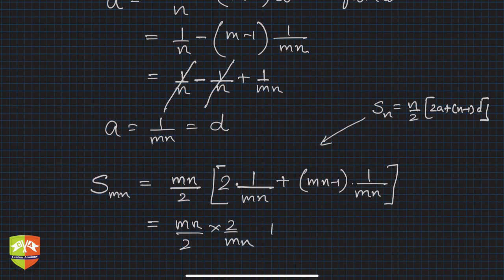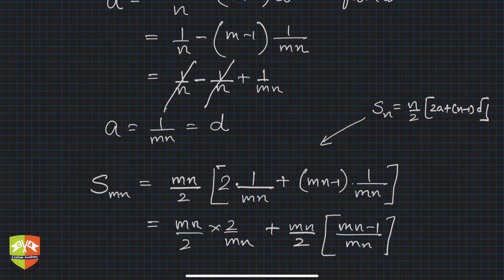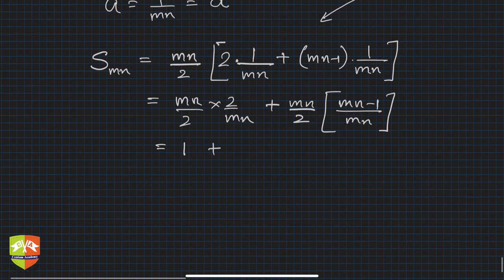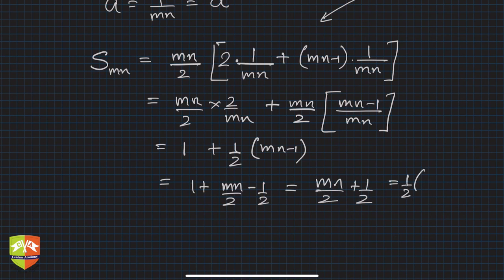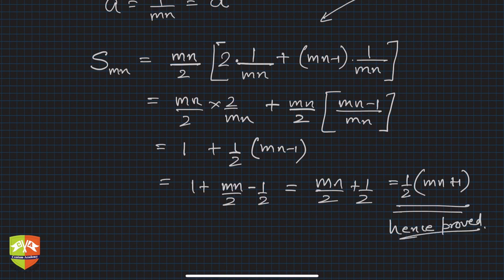Simplifying: S_mn = (mn/2) × [2/mn + (mn − 1)/mn] = 1 + ½(mn − 1) = 1 + mn/2 − ½ = mn/2 + ½ = ½(mn + 1). Hence proved.